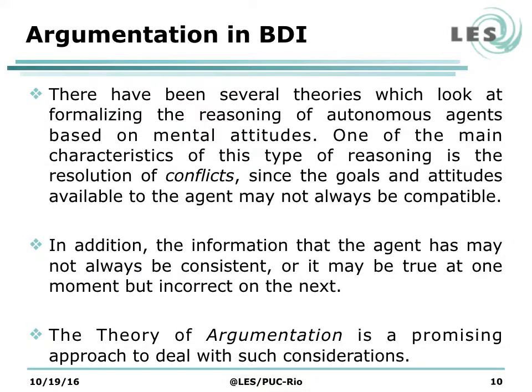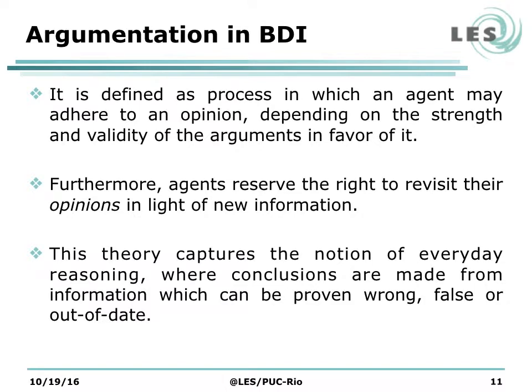There have been many theories which try to formalize the reasoning of autonomous agents based on mental attitudes, such as the BDI model. One of the main characteristics of this type of reasoning is the resolution of conflicts, since the goals and attitudes available to the agent may not always be compatible. In addition, the information that the agent has may not always be consistent, or it may be true at one moment but incorrect at the next. The theory of argumentation is a promising approach to deal with such considerations. Argumentation is defined as a process in which an agent may adhere to an opinion depending on the strength and validity of the arguments in favor of this opinion. Furthermore, agents reserve the right to revisit their opinions in light of new information. This theory tries to capture the notion of everyday reasoning, where conclusions can be made from information which can be proven wrong, false, or out of date.